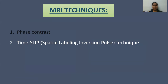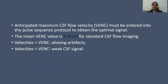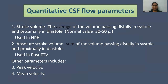There are two types of MRI techniques: the first one is phase contrast and the second one is the time-slip technique. We use phase contrast imaging at our institute. The anticipated maximum CSF flow velocity, also known as the VEC, must be entered into the pulse sequence protocol to obtain the optimal signal. The mean VEC value is usually between 5 to 8 cm/s for standard CSF flow imaging. For velocities more than the VEC, it produces aliasing artifacts, and for velocities less than the VEC, it produces weak CSF signal.